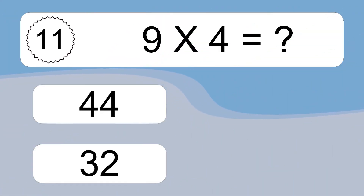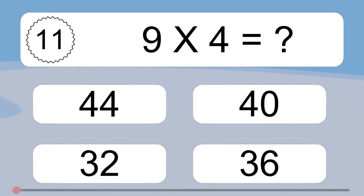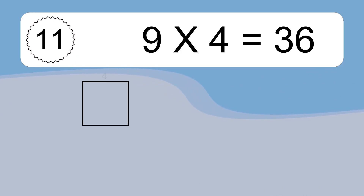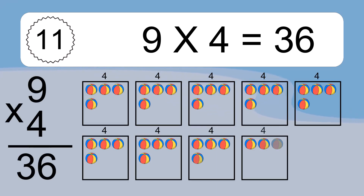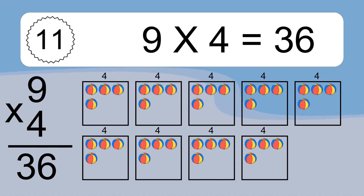9 times 4 equals what? 9 times 4 equals 36. We have 9 boxes, and each box has 4 colorful balls inside. If you count all the balls in all the boxes together, you will have 9 times 4 balls. This equals 36 balls.